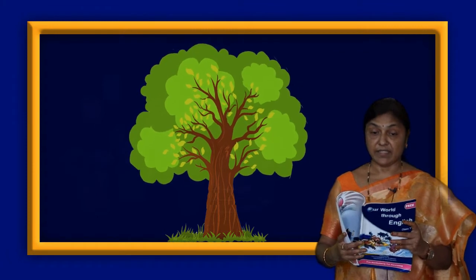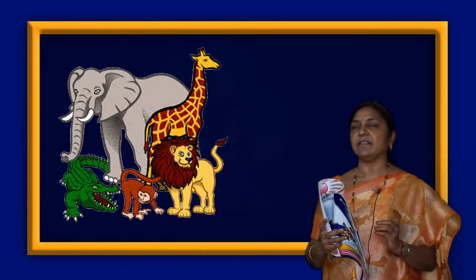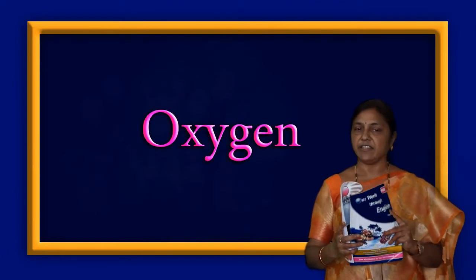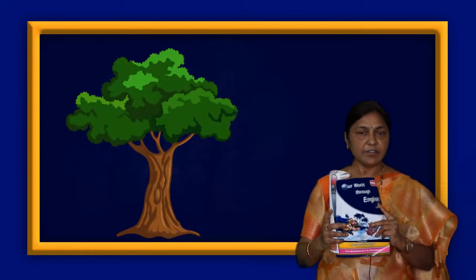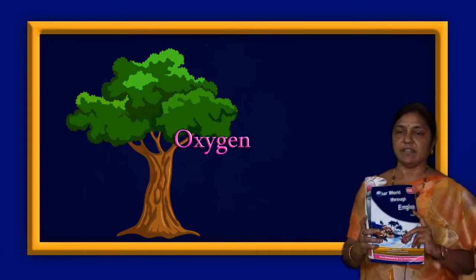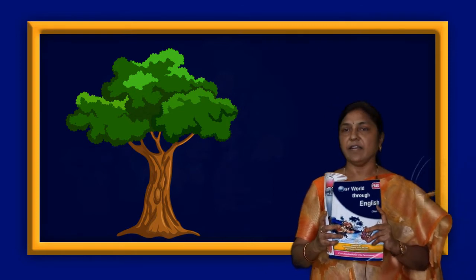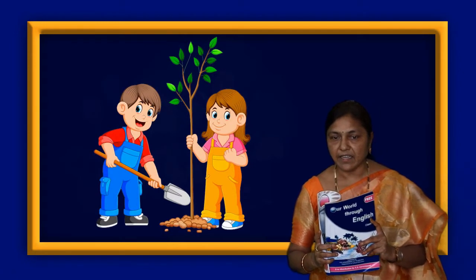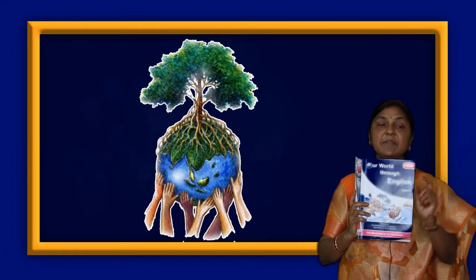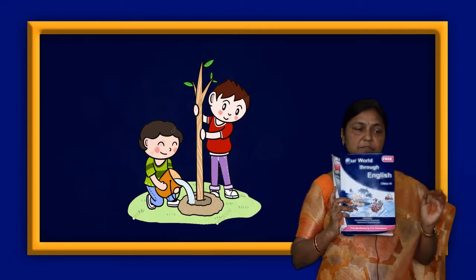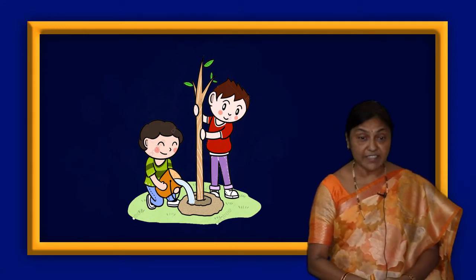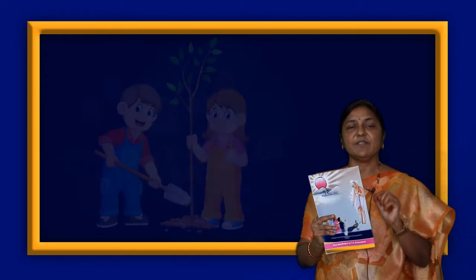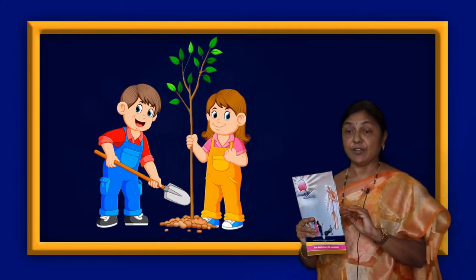Trees are very important to us — not only us, but birds, insects, and animals. Everyone in this universe needs trees to breathe. We breathe in oxygen and breathe out carbon dioxide. In order to live happily and healthily, we need oxygen, and we get oxygen from trees. We have to remember not to cut down trees — we should plant trees. When you celebrate your birthday, plant one tree every year. Keep trees safe, water them, and take care of them. Love the tree, because the tree is your friend. Every year you plant a tree, you will get a new friend.